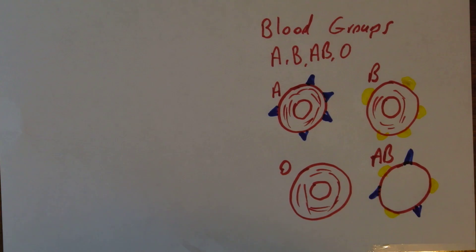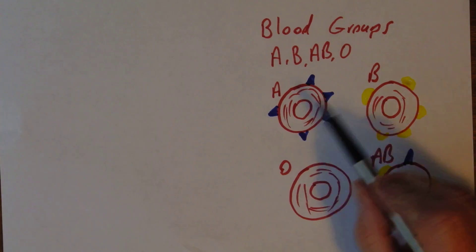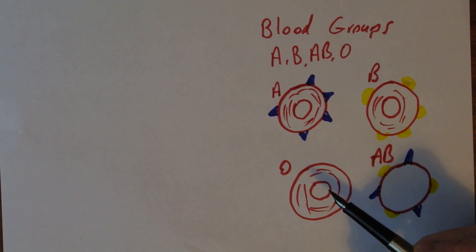Now the thing about the antigens is they are genetically determined, as we've said. And also they are dominant. So blood group A antigen is dominant, blood group B antigen is dominant, O is recessive. Actually it's only one blood group gene, but it comes as three alleles: the A, B, and O allele.